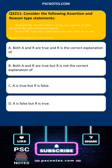Consider the following assertion and reason type statements. Assertion A: Human capital is in one way superior to other resources like land and physical capital. Reason R: Land and capital cannot become useful on its own. Which of the above is correct? Both A and R are true and R is the correct explanation; Both A and R are true but R is not the correct explanation; A is true but R is false; A is false but R is true.